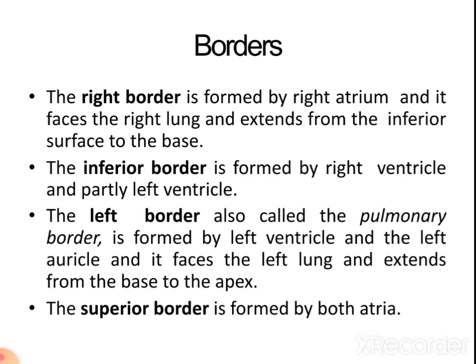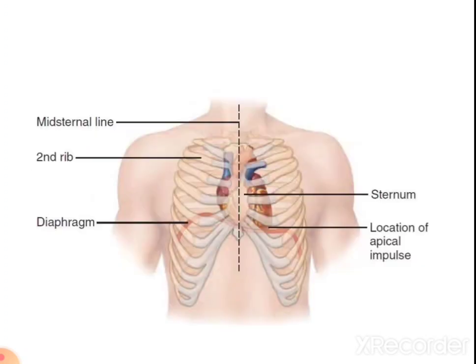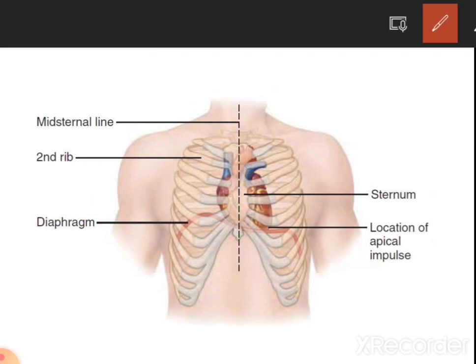There are four borders of the heart. The right border is formed by the right atrium. The inferior border is formed by the right ventricle. The left border is formed by the left ventricle and left auricle, also known as the pulmonary border. The superior border is formed by both atria. In the diagram we can see the superior border, right inferior border, and left border.